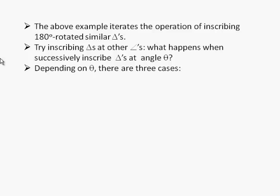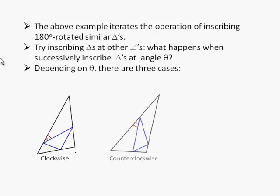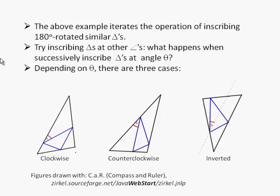Now if you think about it, depending on theta there are three cases. The inscribed triangle could be at an angle clockwise from the original triangle, or the inscribed triangle could be at an angle counterclockwise from the original triangle, or the inscribed triangle could be inverted from the original triangle. I'm going to focus on clockwise in this case. The other two are interesting. Counterclockwise is basically the same. Inverted is an interesting case, but it's somewhat different.